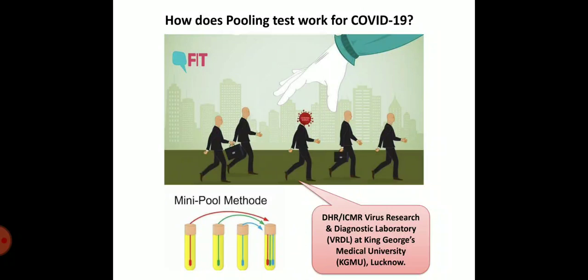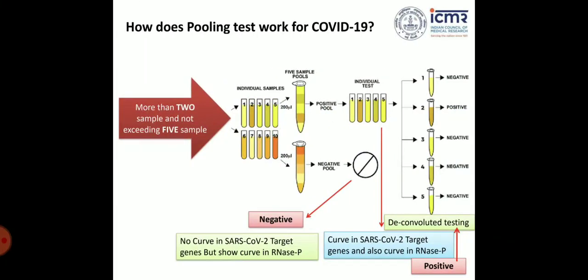This is how it works — you reduce time and really pick up the true positives. This is recommended by ICMR and was validated by ICMR VRD laboratory at King George Medical University. The first criteria: please pool more than two samples. There is no point in pooling just two samples because you reduce only half — there is no real benefit. You have to pool more than two samples.